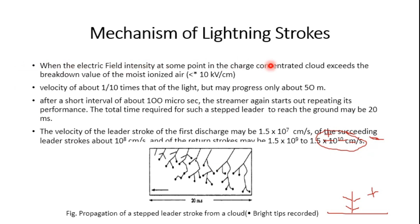When the electric field intensity at some point of charge concentration exceeds the breakdown value — let's say 10 kV per centimeter — there is an initiation of streamers. This is essentially canal formation: a plasma channel starts progressing towards the ground with a velocity of about 1/10 the speed of light, progressing only about 50 milliseconds.